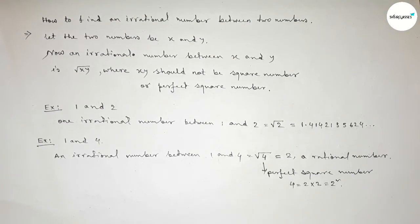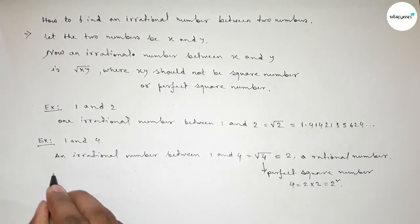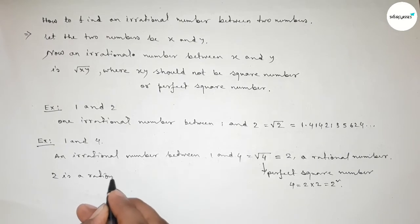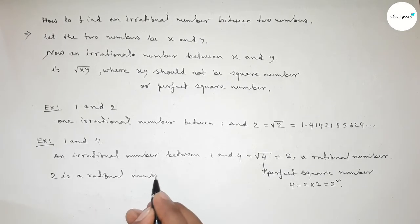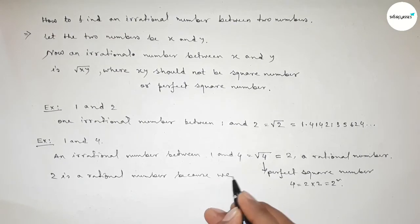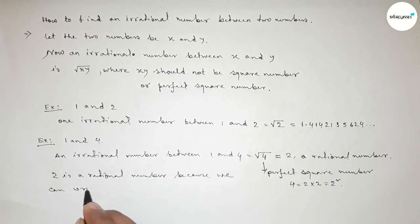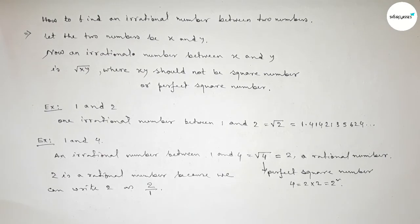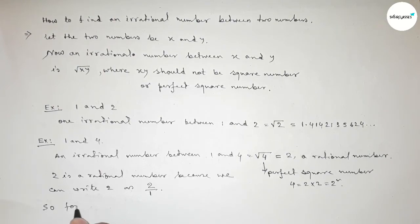So this contradicts with our method. So here 2 is a rational number because we can write 2 as 2 over 1. So we can express 2 in the form of a fraction like 2 over 1.